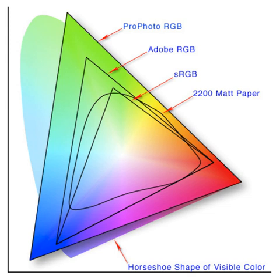The TSL color space — tint, saturation, and luminance — is used in face detection. Early, now obsolete color spaces had two components; they largely ignored blue light because the added complexity of a three-component process provided only a marginal increase in fidelity when compared to the jump from monochrome to two-component color.